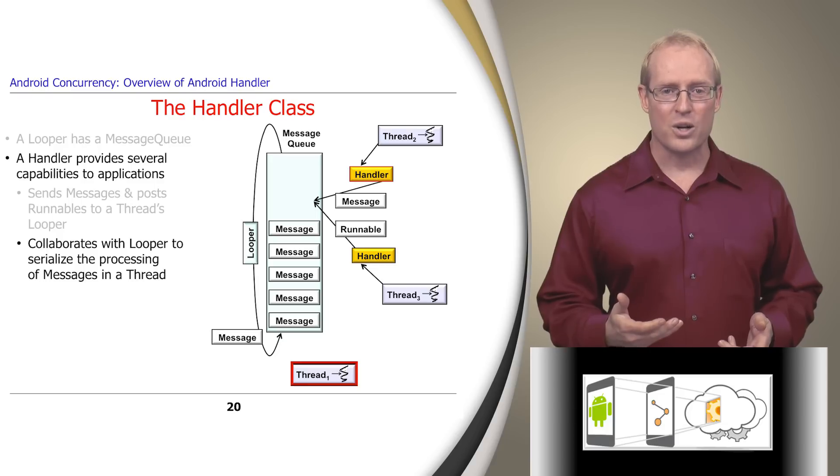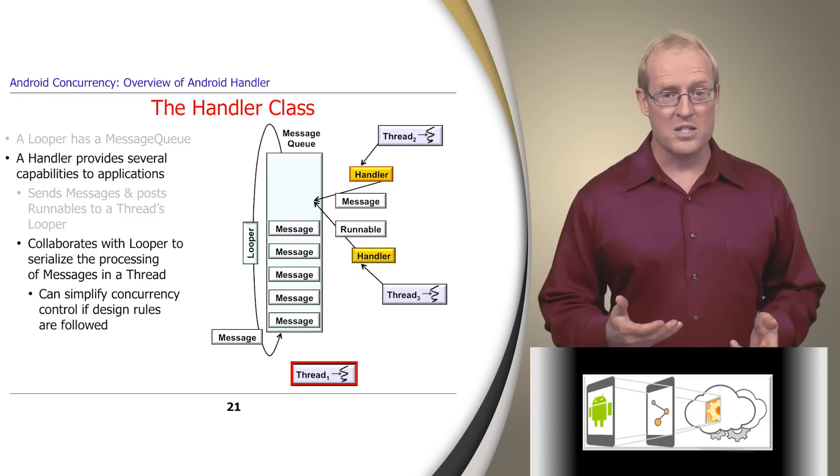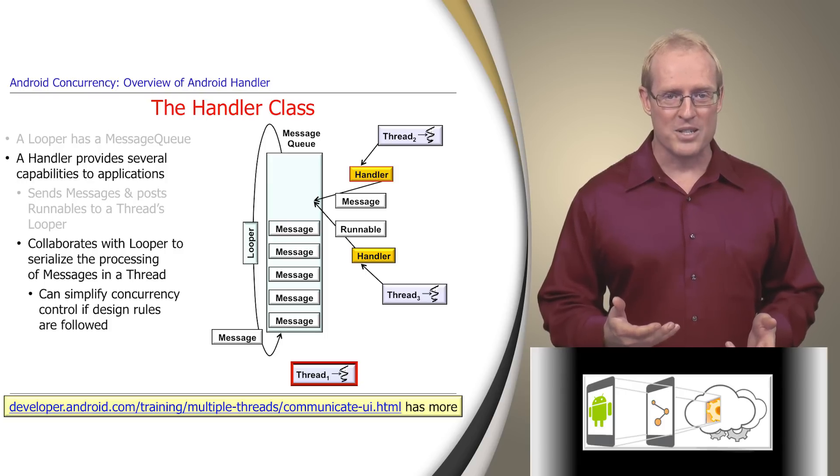A handler and looper also collaborate to serialize the processing of messages within the thread they're associated with, which can be used to simplify concurrency control by eliminating the need for synchronization mechanisms, as long as the appropriate patterns and framework design rules are followed, as described at this link.